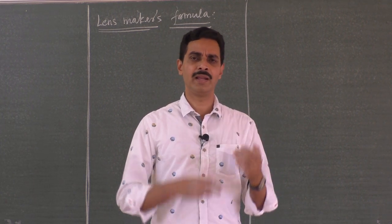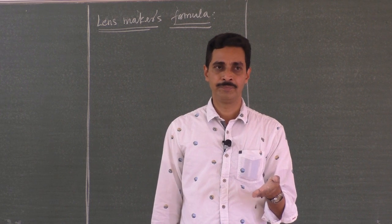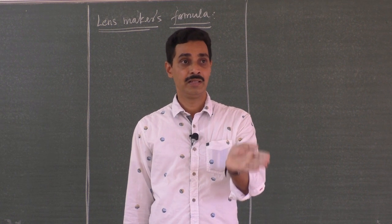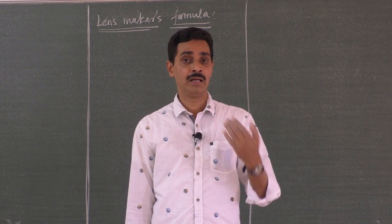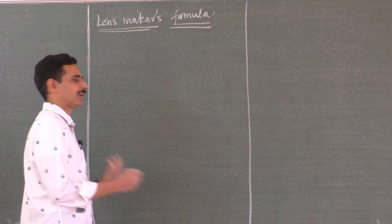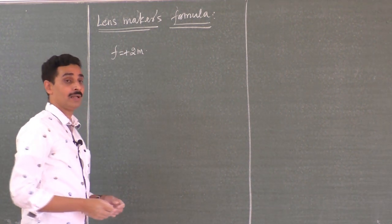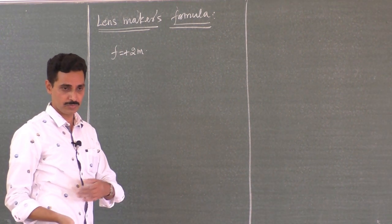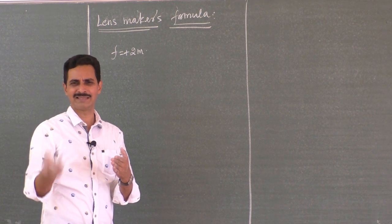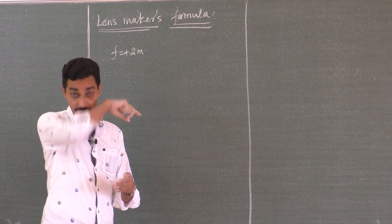Or the doctor will prescribe a lens of a certain focal length — you have to wear so much power or so much focal length. Now you will take it to the shop. You will ask the lens maker to prepare such a lens because the doctor has prescribed it. If you want a lens of 0.5 diopter power, or suppose the doctor has prescribed a lens of focal length plus 2 meters, the shopkeeper will ask you what type of lens you want — made of fiber, plastic, glass, flint glass, or even diamond. Which material?